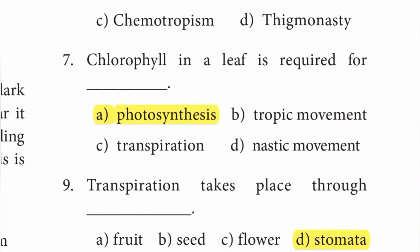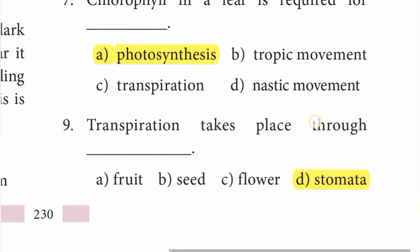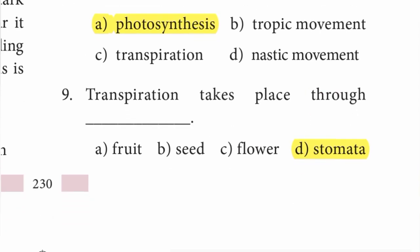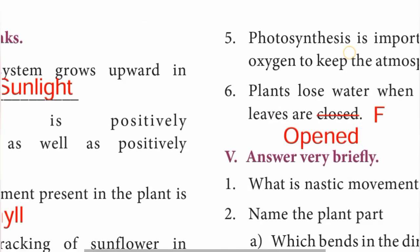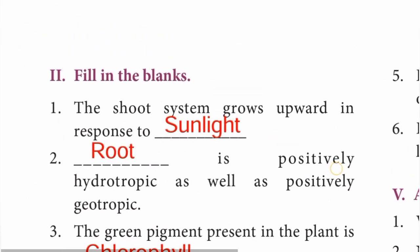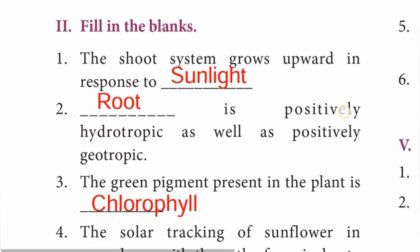Number seven: chlorophyll in a leaf is required for photosynthesis. Option A is the answer. Number nine: transpiration takes place through stomata. Option D - stomata is the answer. Moving to page number 231, Roman number two - fill in the blanks.